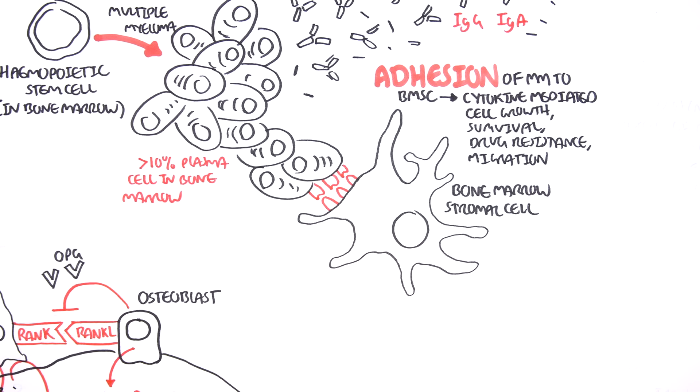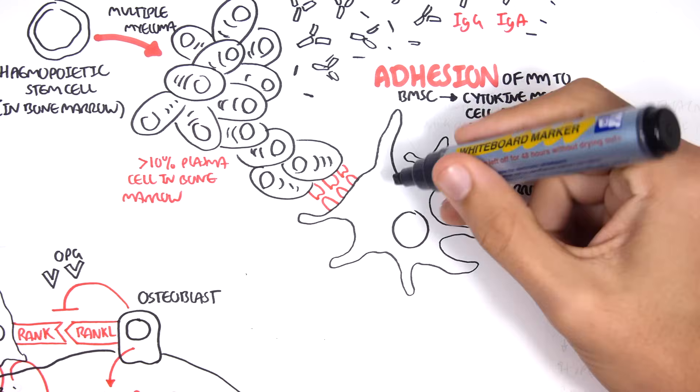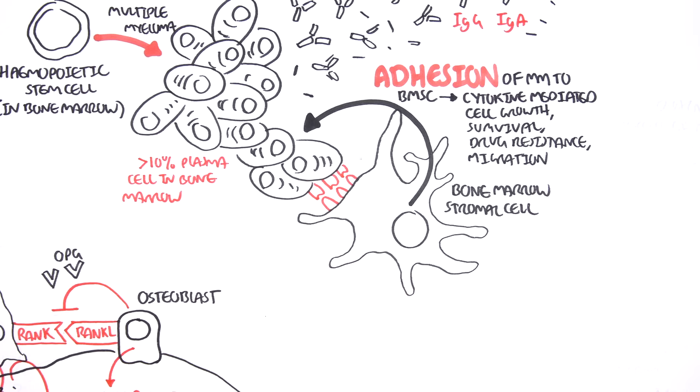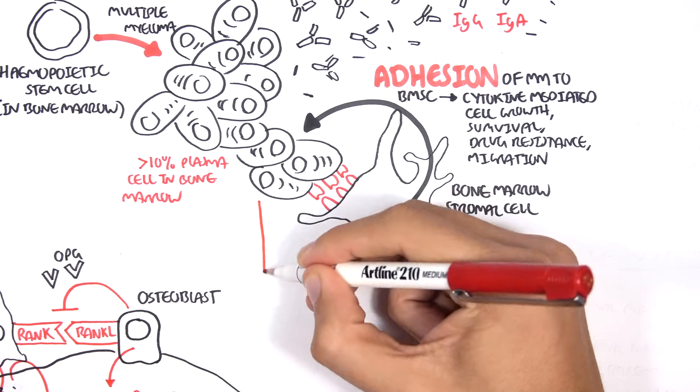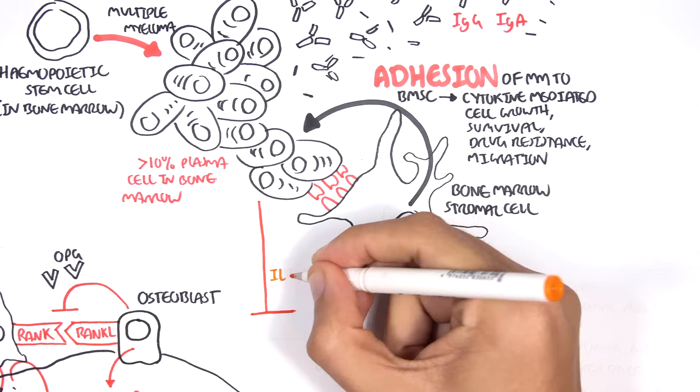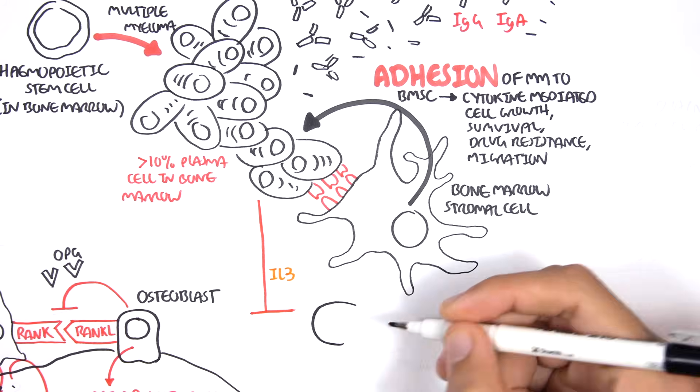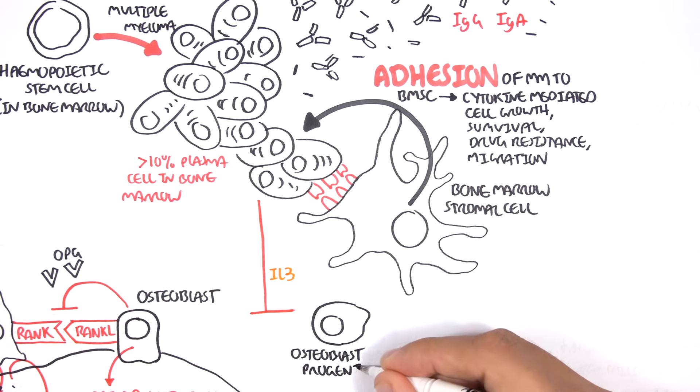When the multiple myeloma cells survive and grow, they then do other things that help themselves. The multiple myeloma cells secrete many cytokines and they have some bad consequences for the body. For example, the multiple myeloma cells can secrete interleukin-3, which actually decreases osteoblastic activity by inhibiting osteoblast progenitor cells to become osteoblasts. Basically, it just decreases the production of osteoblasts.